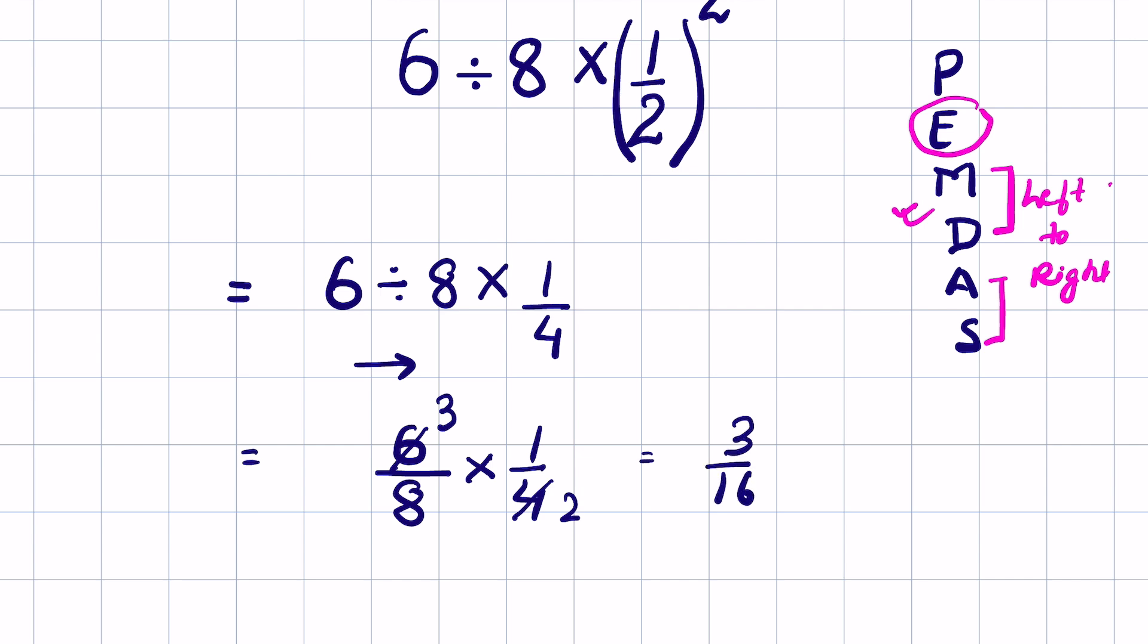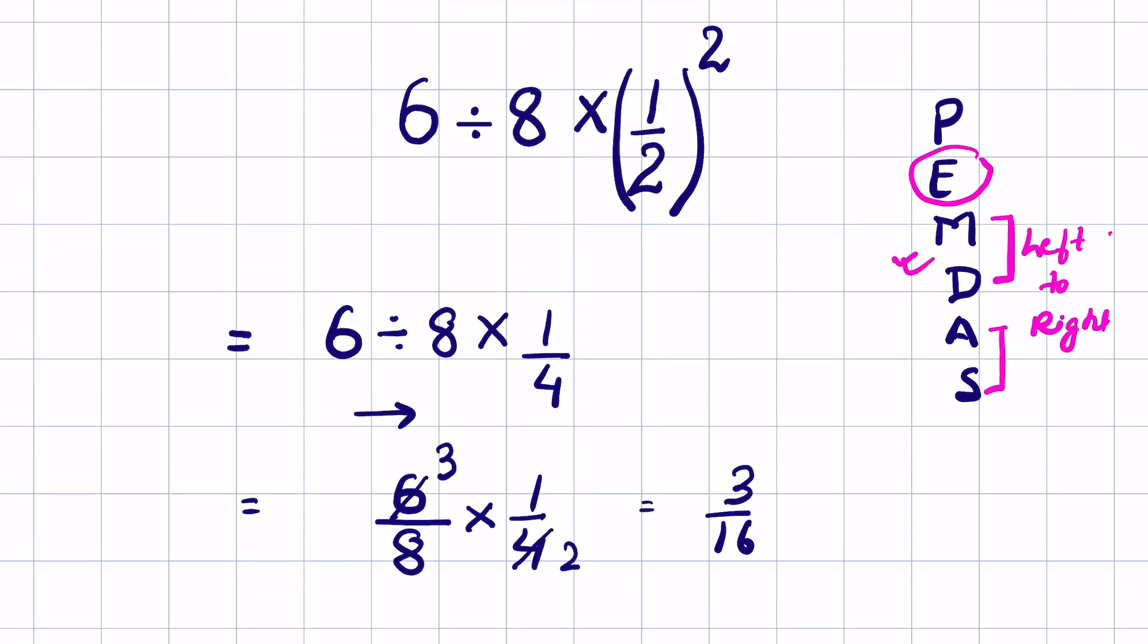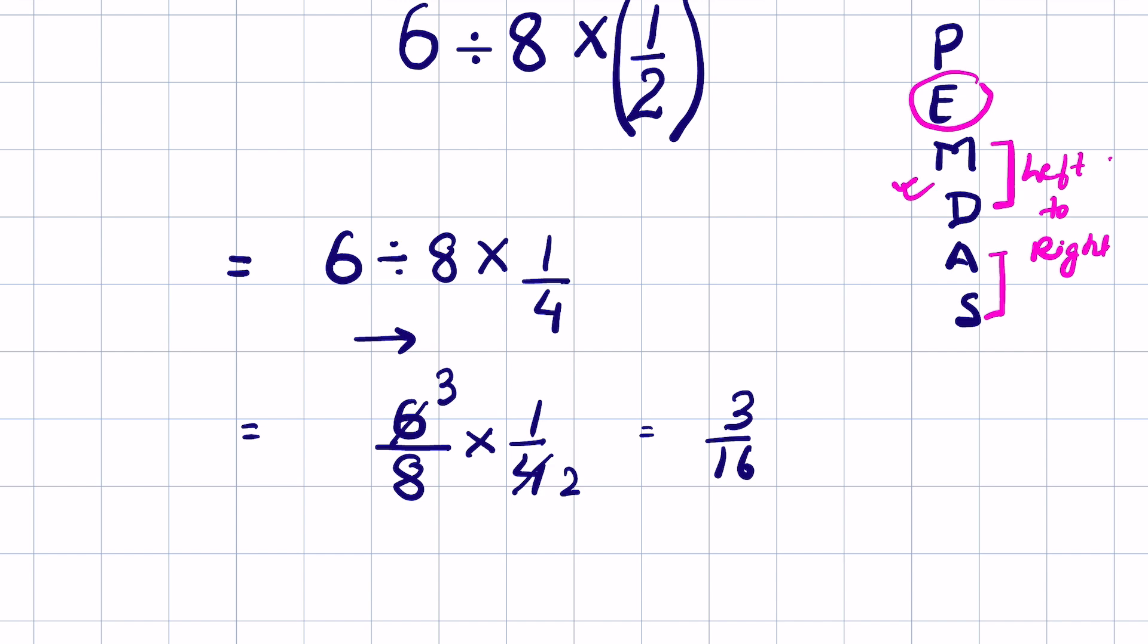Here if you don't follow the left to right rule and you do the multiplication first, the result will be different. You see, if you do the multiplication first it will be 8 times 1 upon 4. 4 times 2 is 8, and then 6 divided by 2 that will be 3. So 3 will be your answer.